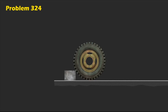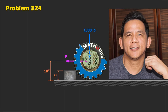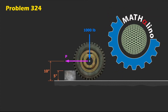We are required to find the force P necessary to start the wheel over this block. Dimensions are given: 5 inches for the height of the block, and the wheel has a radius of 10 inches. This wheel carries a load of 1,000 pounds.